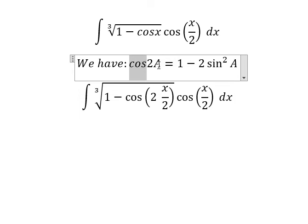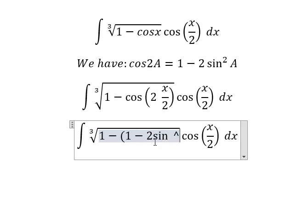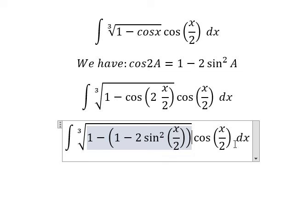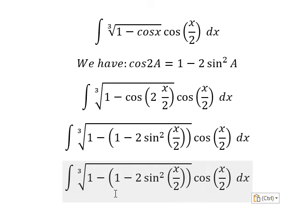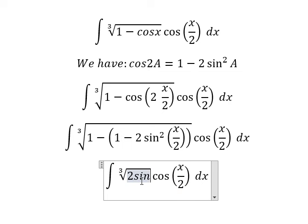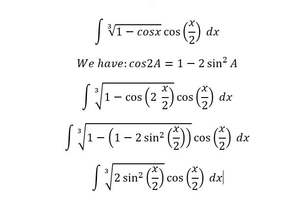Now we need to transform this one into this one. And that should be like this. So 1 minus 1, we cancel. Negative and negative, we have positive.